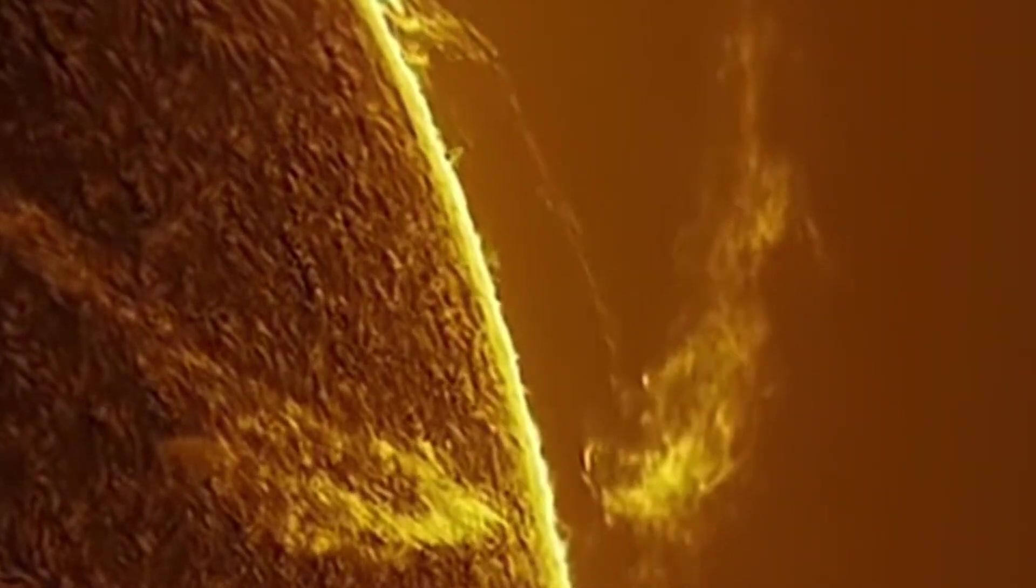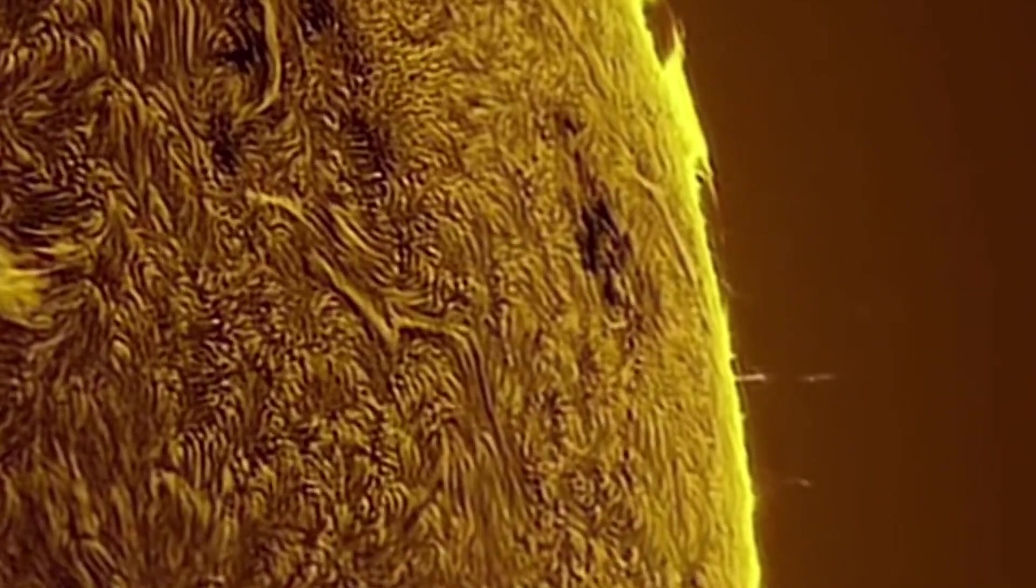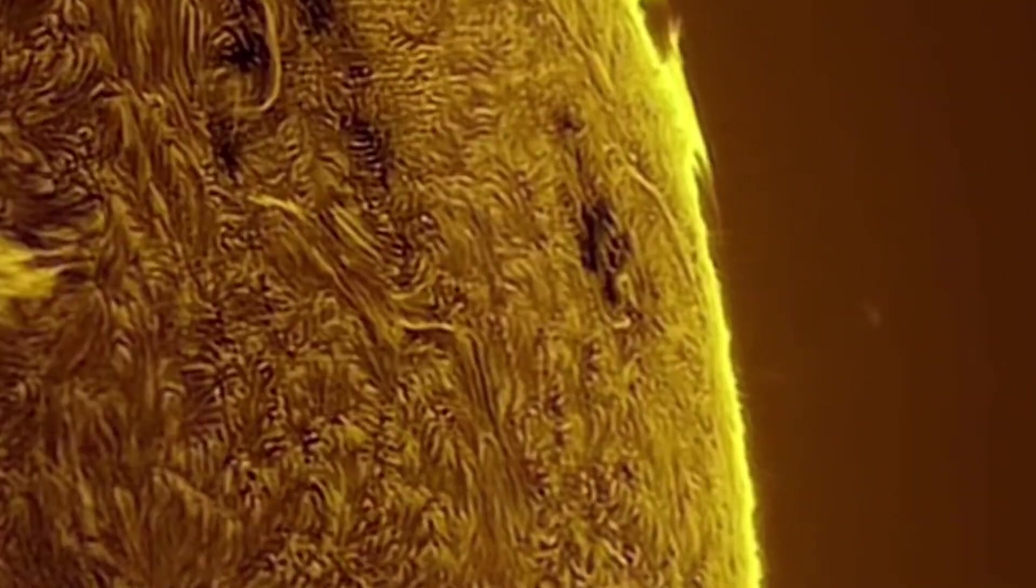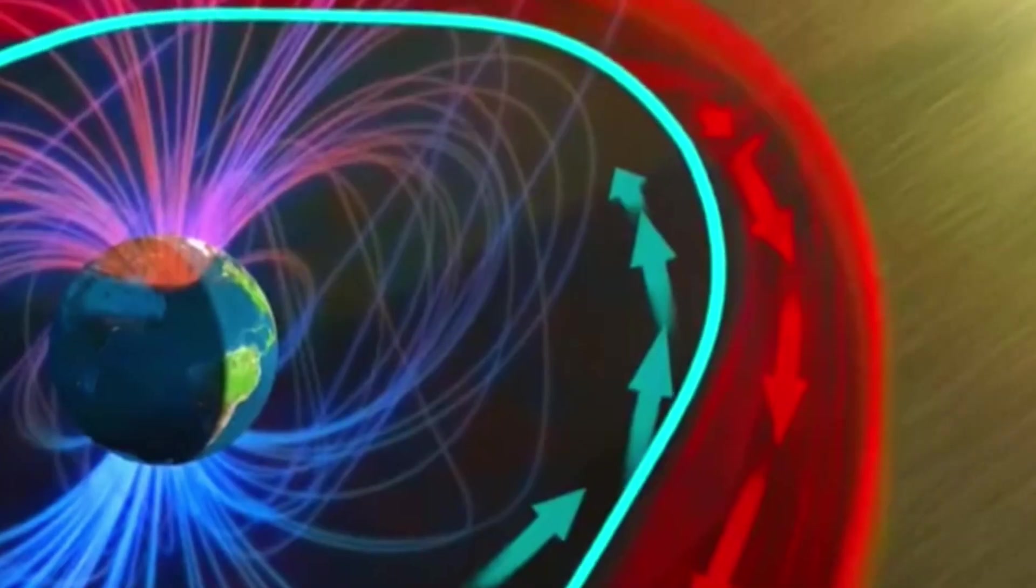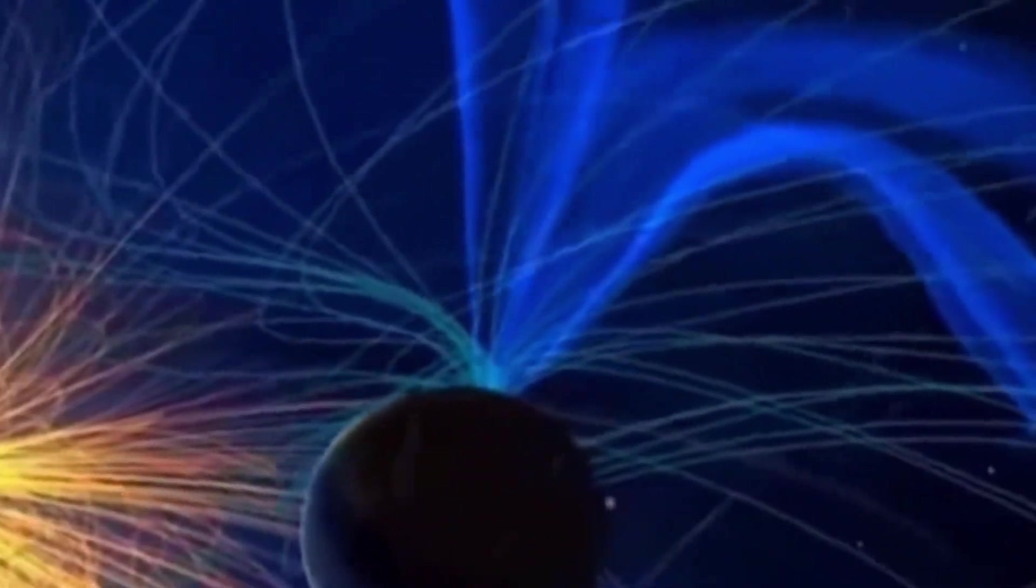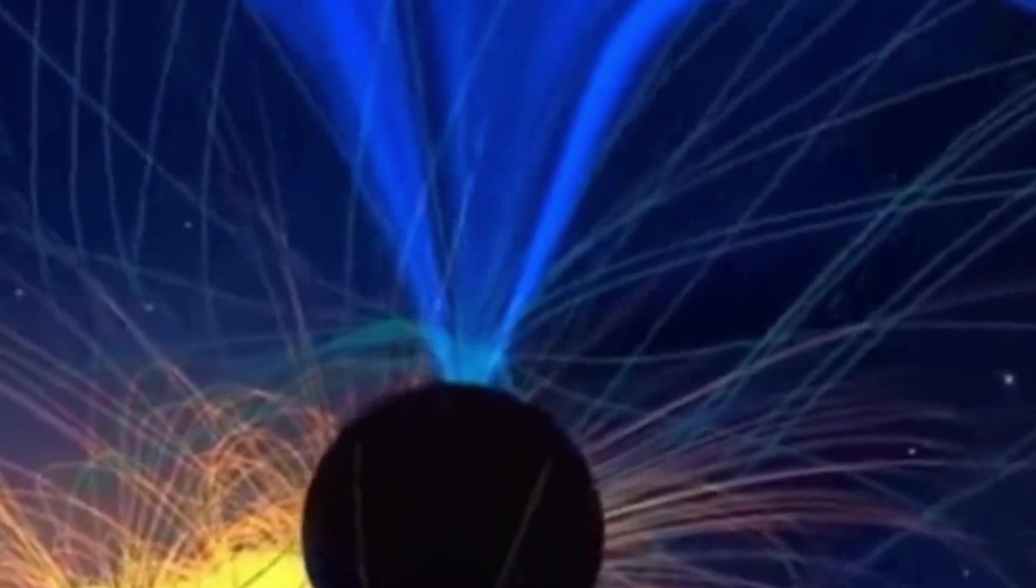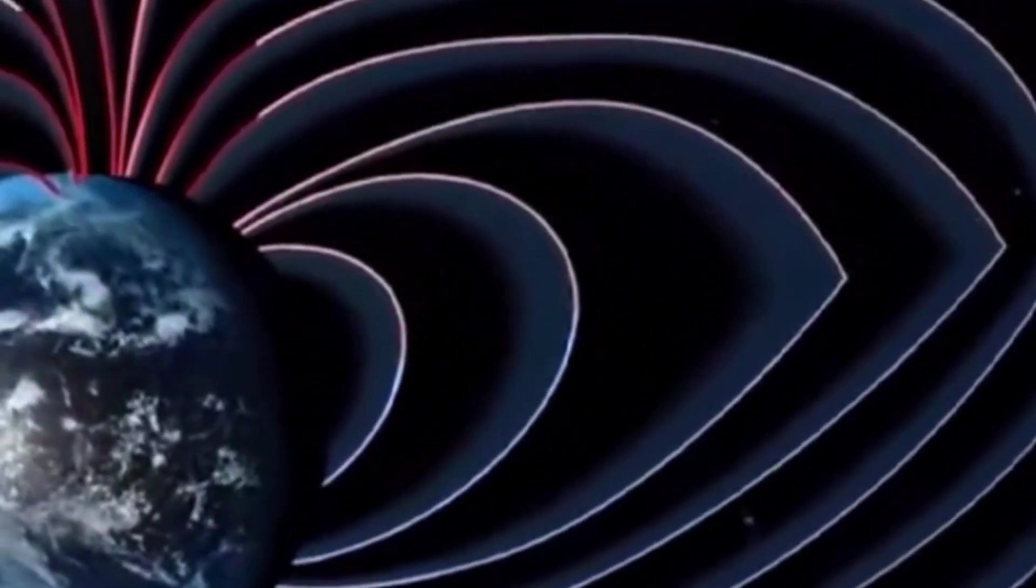Imagine, just for a moment, what our planet would look like without it. The skies would be stripped of their protective layer, leaving the surface vulnerable to the full force of space. Over time, the oceans could evaporate, the atmosphere could thin, and our once blue and vibrant world could resemble Mars: dry, barren, and lifeless. This is the power of the magnetic field, a force we cannot see, touch, or hear, yet one that keeps us alive every single day.